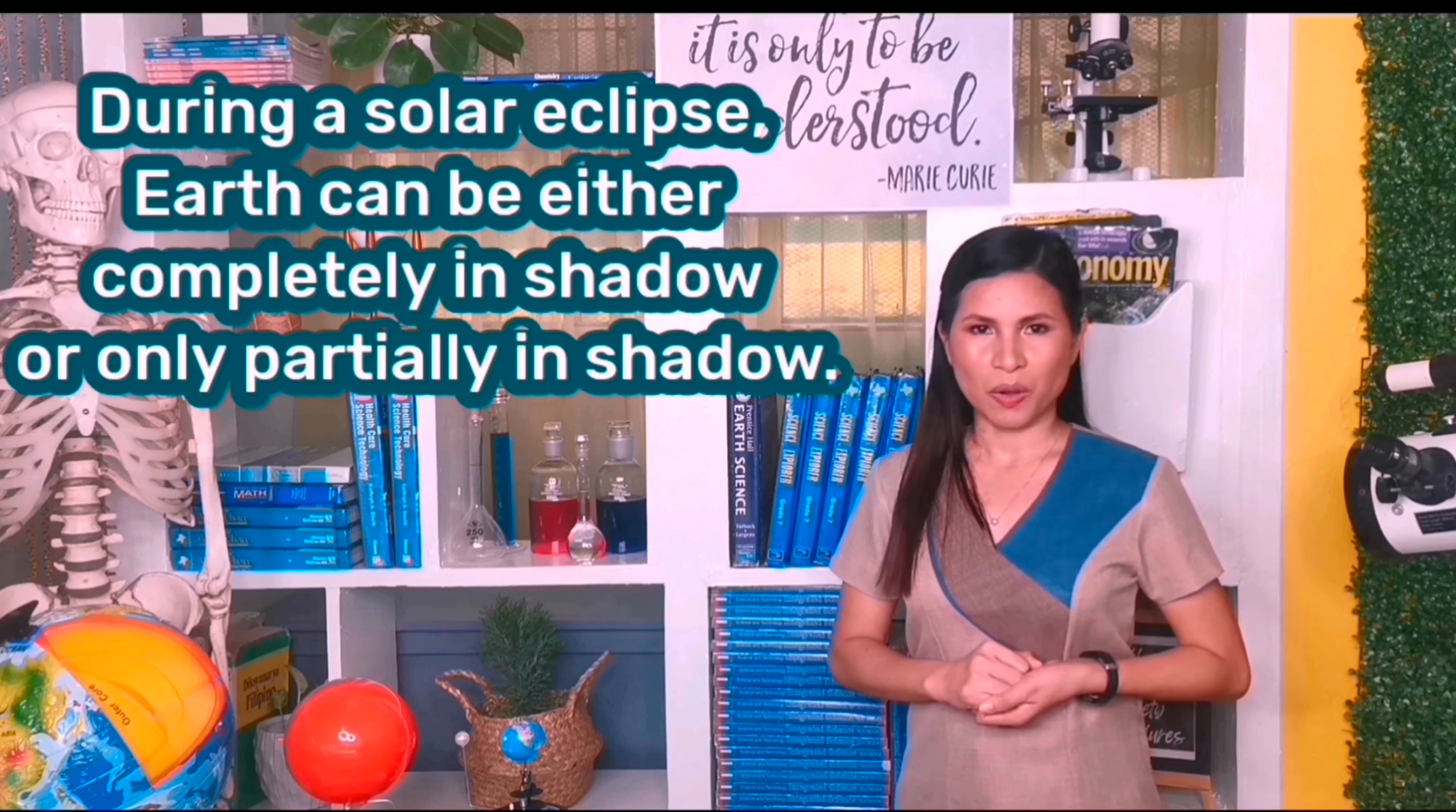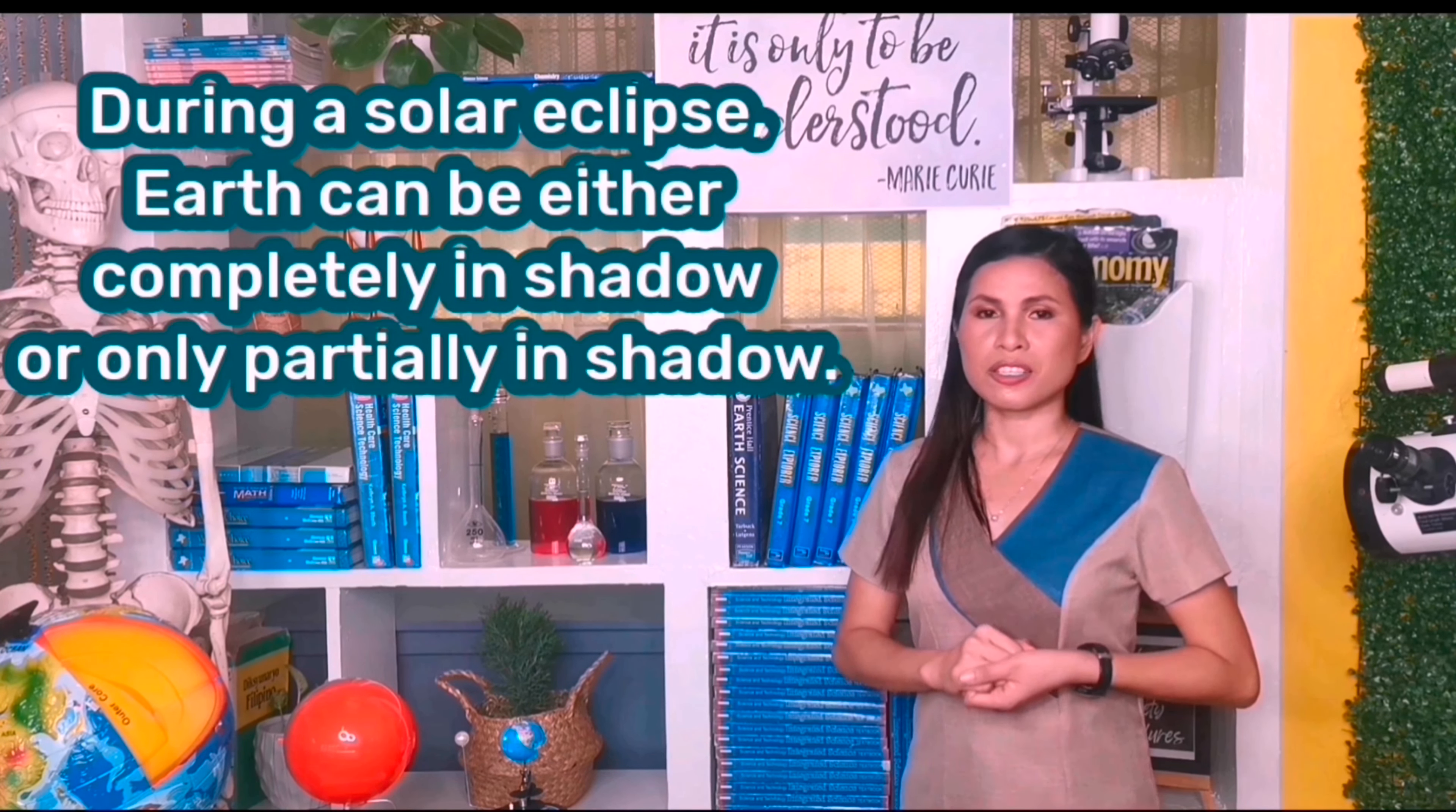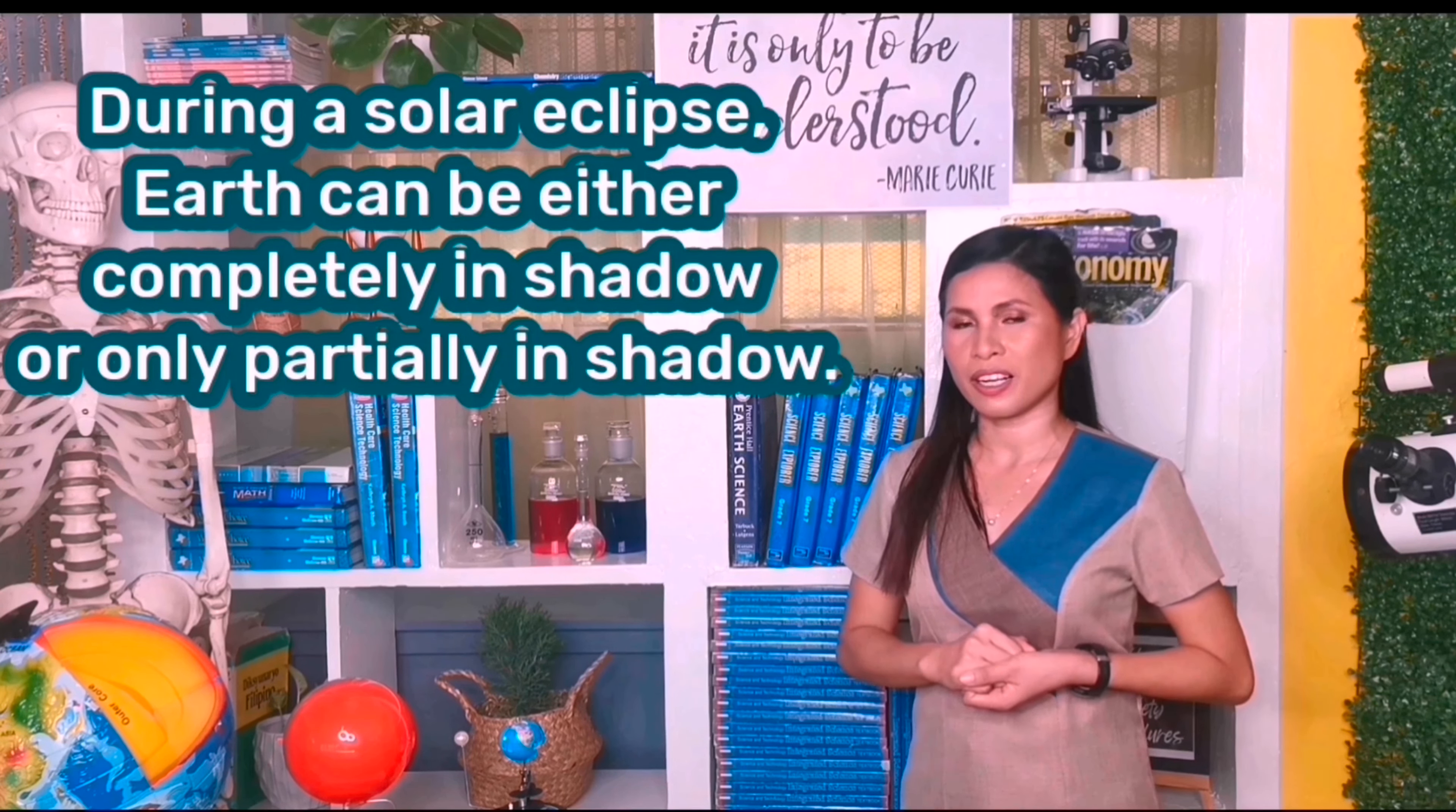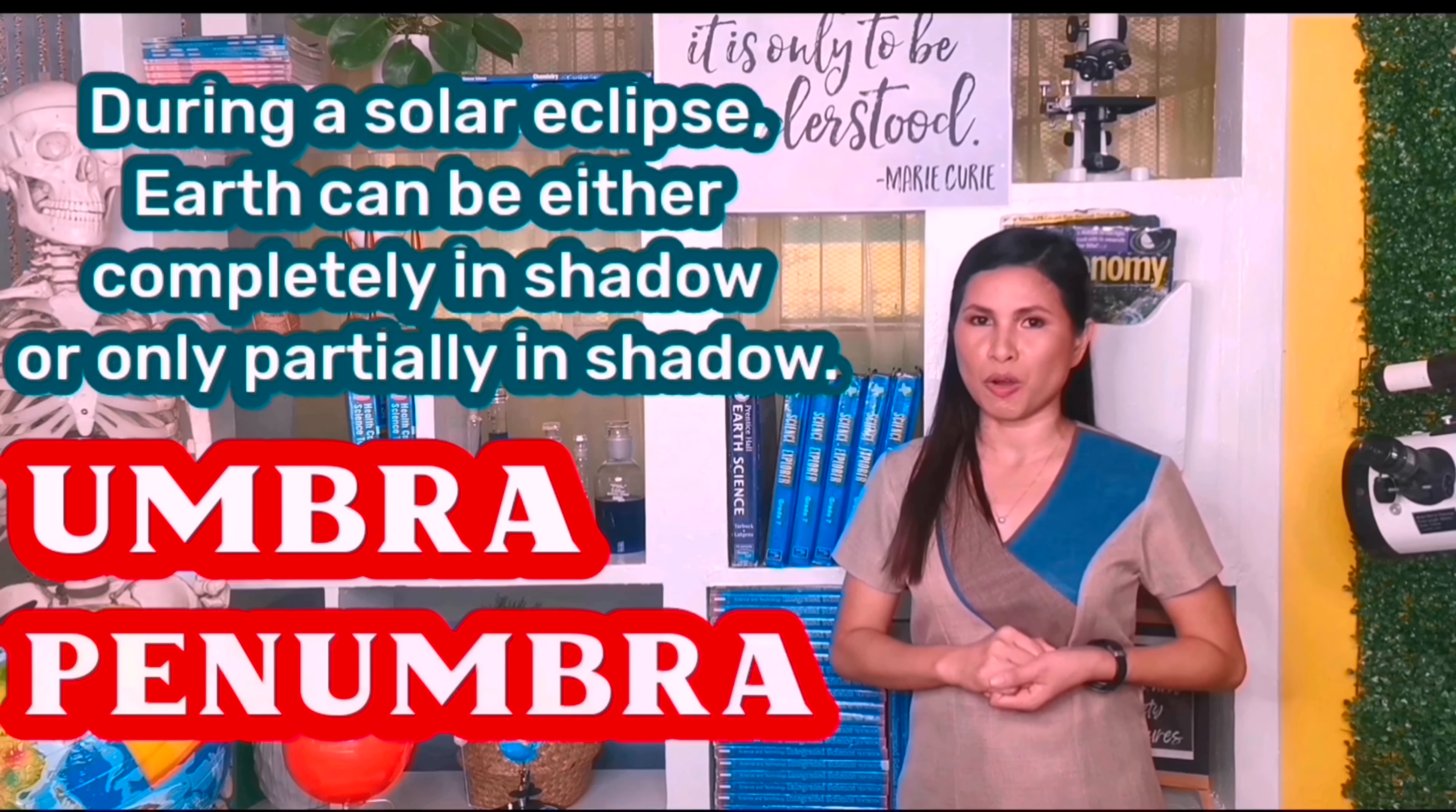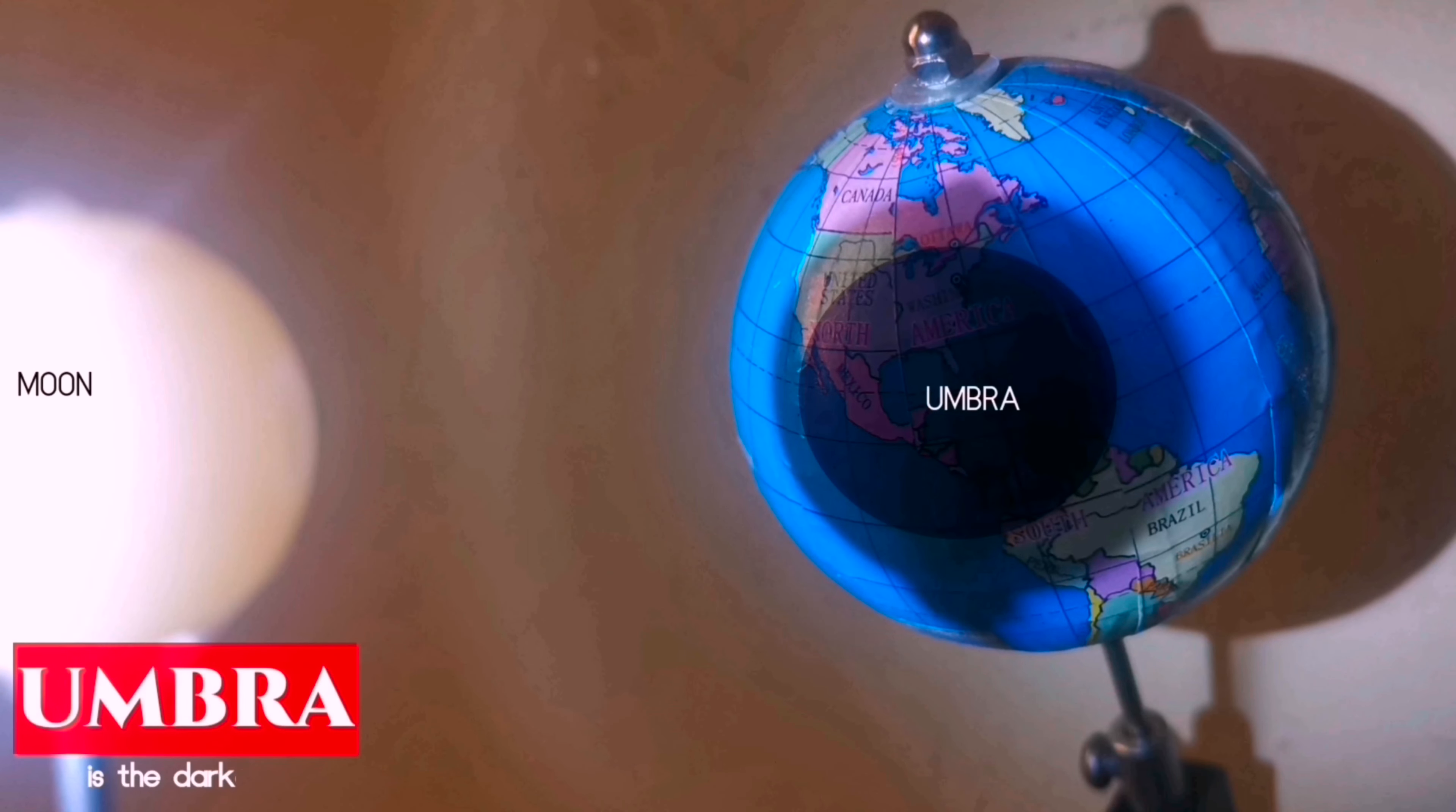During a solar eclipse, Earth can be either totally in shadow or partially in shadow. These distinct parts of the Earth's shadow during a solar eclipse are umbra and penumbra.